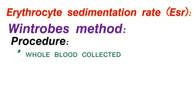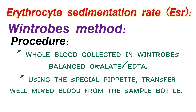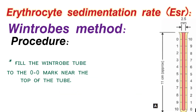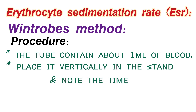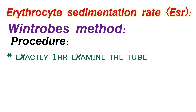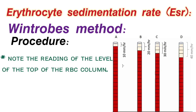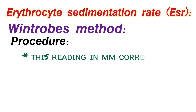For the procedure: first, collect the blood sample and mix it with EDTA solution. Using a Pasteur pipette, fill the Winthrobe tube to the 0 marking with 1 ml of blood. Place the tube vertically in the Winthrobe stand. Start the timer for one hour. After one hour, note the level at which the red blood cells have settled — for example, at 20 mm or 30 mm — and record the ESR reading.